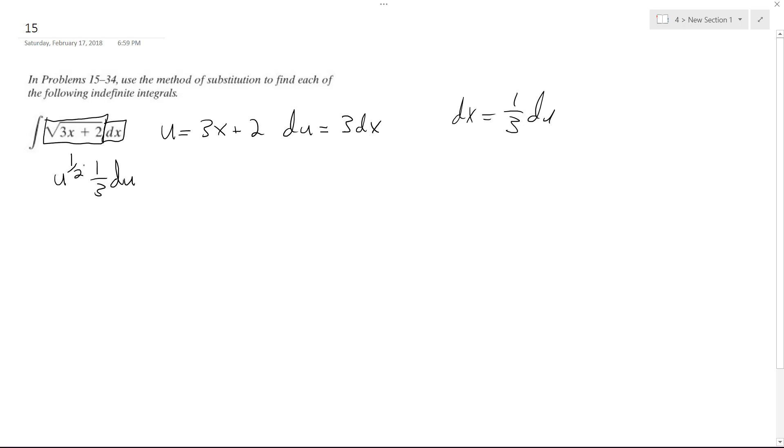So therefore I have 1 half of 1 third du. Integrating this now, what I'm going to get is u raised to the 1 half, and I have 1 third over here, plus 1 over 1 half plus 1, plus C.